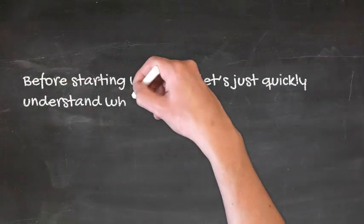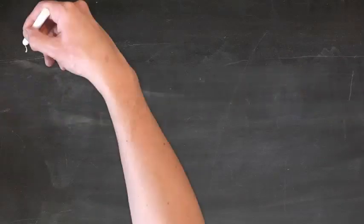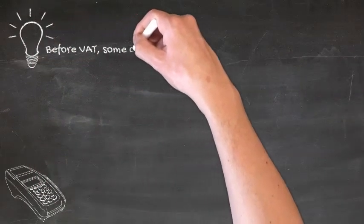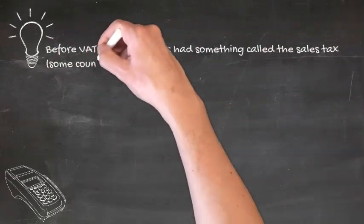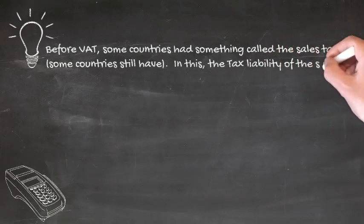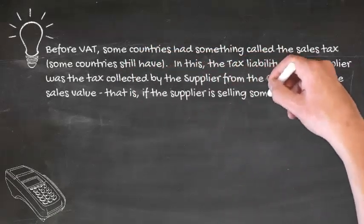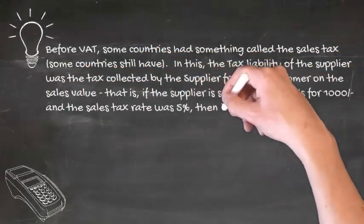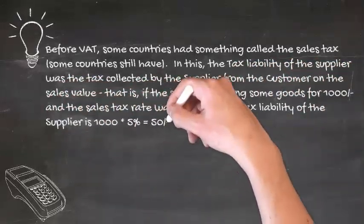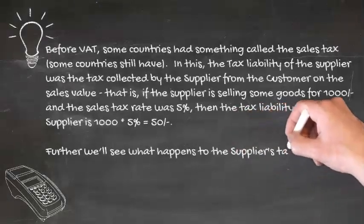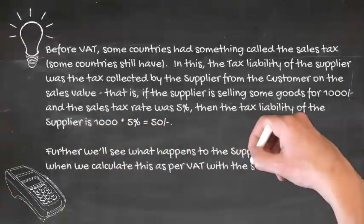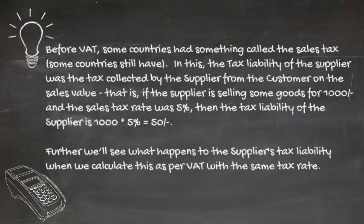Before starting with VAT, let's quickly understand what difference VAT made from its predecessor. Before VAT, some countries had something called a sales tax — some countries still do. In this, the tax liability of the supplier was the tax collected from the customer on the sales value. That is, if the supplier is selling goods for $1,000 and the sales tax rate was 5%, then the tax liability of the supplier is 5% of $1,000, which equals $50. We will see what happens to the supplier's tax liability when we calculate this as per VAT with the same tax rate.